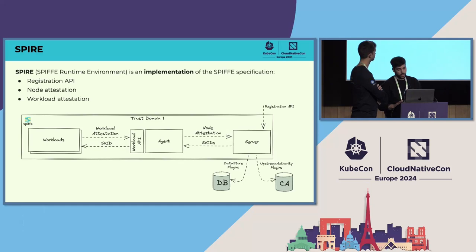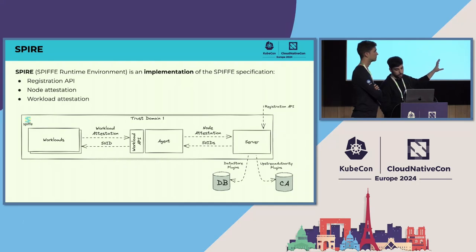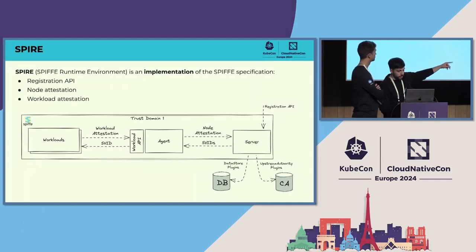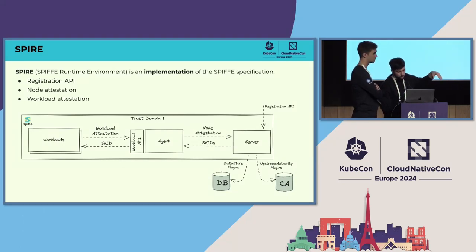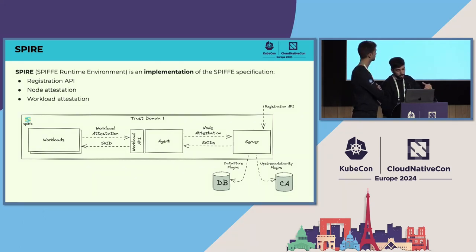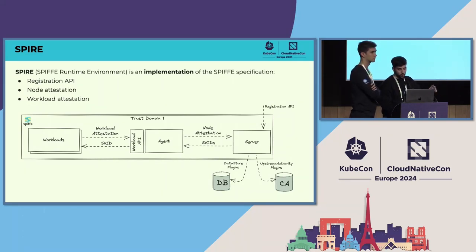In order to do that, we first need to register the different workload entries using the registration API into the server. The server stores these identities in a database — SPIRE supports several different storage backends via data store plugins. The server also has to generate certificates for the different SVIDs, so we need a CA plugin. You can use an external certification authority, or by default it will auto-generate one.